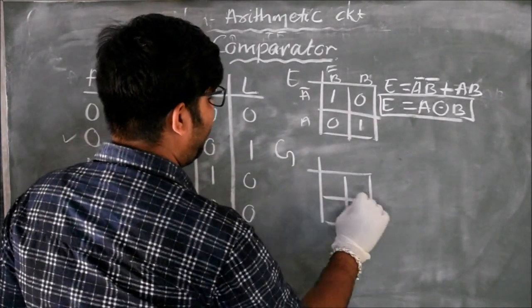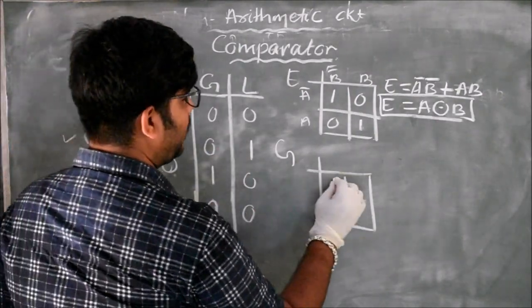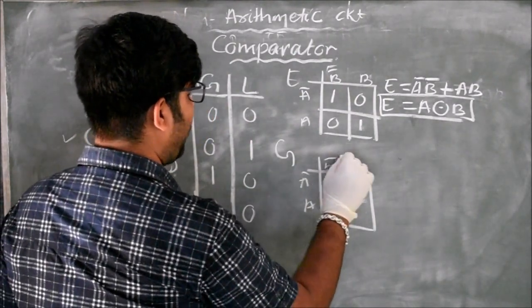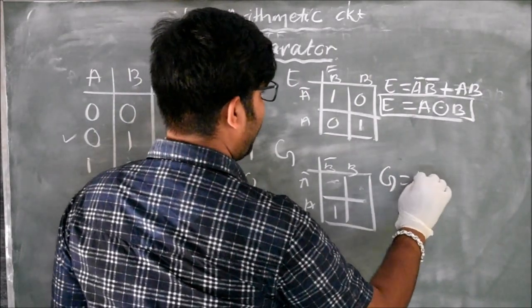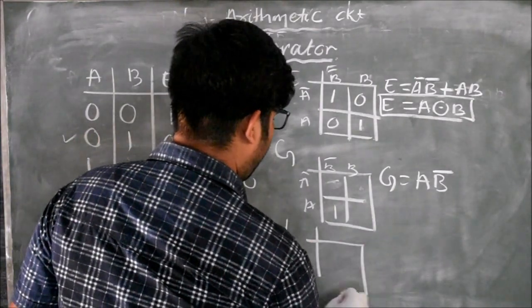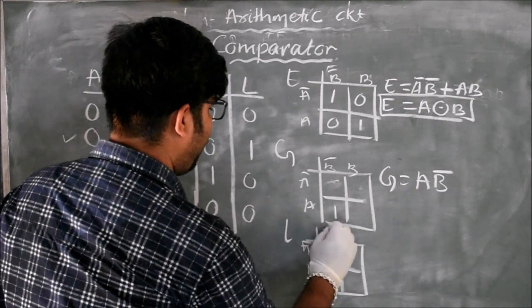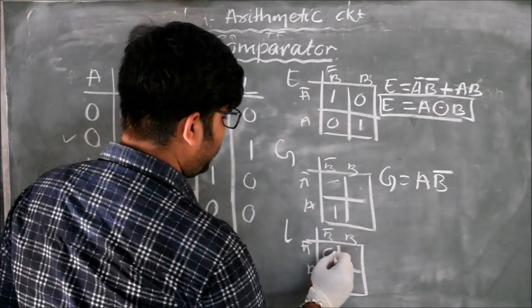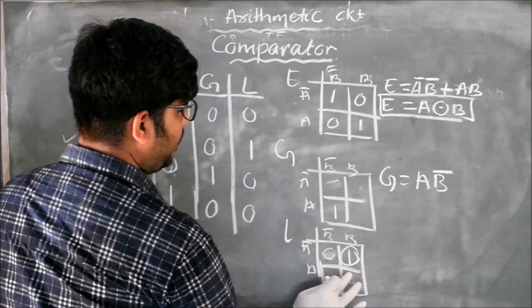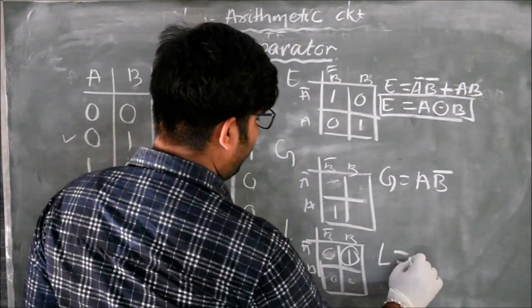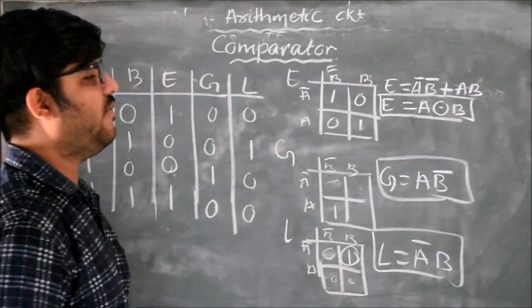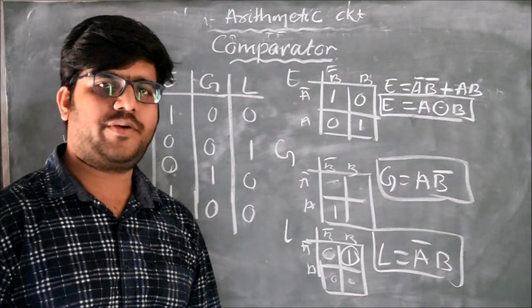For greater than, we construct another K-map with entries 0, 0, 1, 0, giving the expression: Greater = AB̅. For less than, the K-map gives the expression: Less = A̅B. These are the three equations of the magnitude comparator.